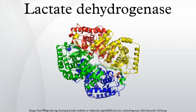LDH undergoes transcriptional regulation by PGC-1α. PGC-1α regulates LDH by decreasing LDH mRNA transcription and the enzymatic activity of pyruvate to lactate conversion.